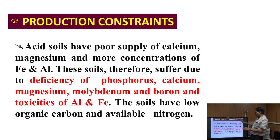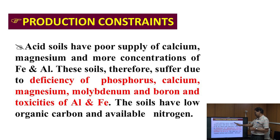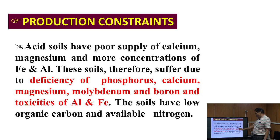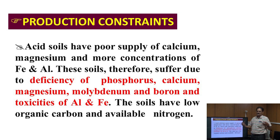In summary, acid soil has a poor supply of calcium, magnesium, and a more concentration of iron and aluminum. This soil therefore suffers due to the deficiency of phosphorus, calcium, magnesium, molybdenum, and boron, and toxicity of iron and aluminum. This soil has low organic carbon and available nitrogen. This slide reflects a summarized concept about nutrient availability in the acid soil condition.